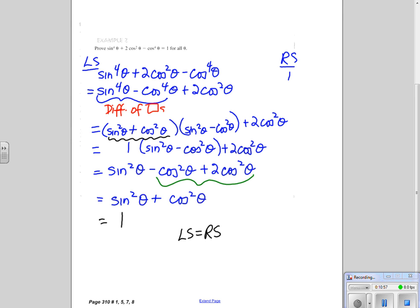Therefore, it is true that sine to the fourth theta plus 2 cos squared theta minus cos to the fourth theta equals 1 for all theta.